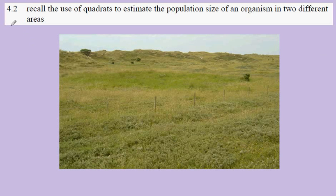GCSE Biology, syllabus section 4.2. Here we're discussing the use of quadrats to estimate the population size of organisms in two different areas.